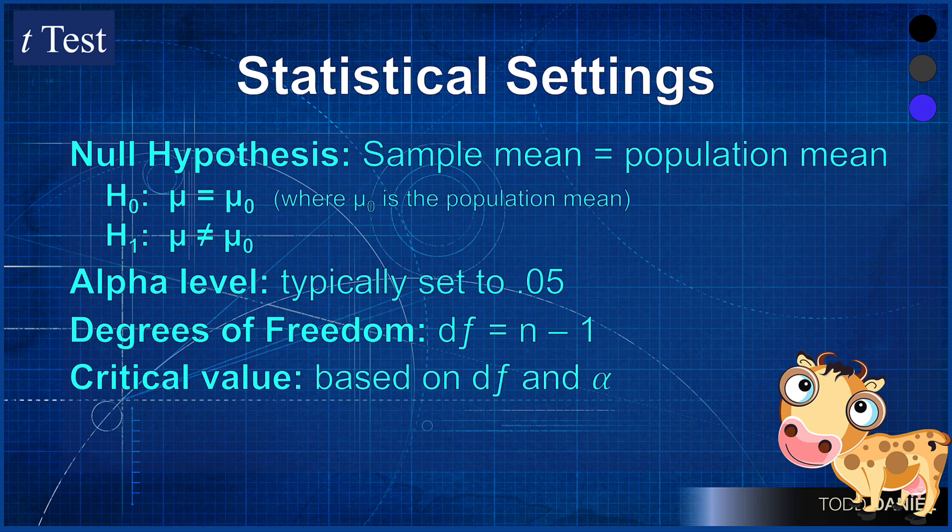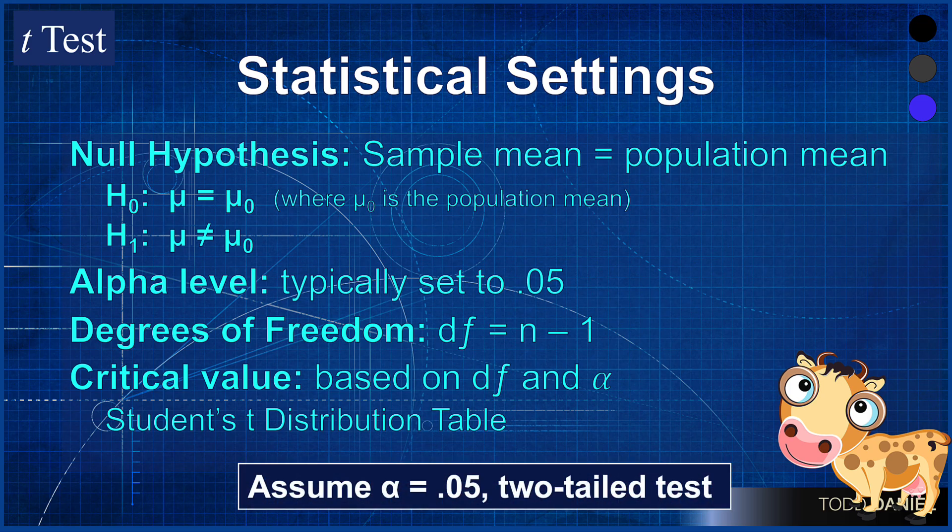We will look up a critical value in Student's t-distribution table, which has been included in your course notes. For any test that we do, unless you are instructed otherwise, it is safe to assume that we are doing an alpha 0.05 two-tailed test.